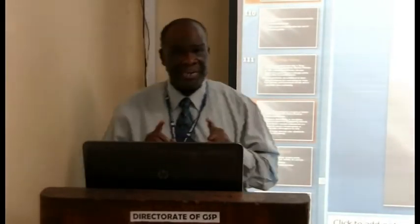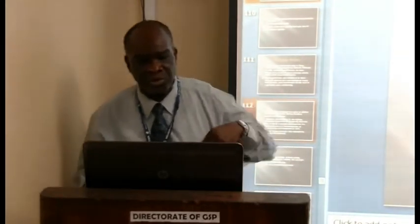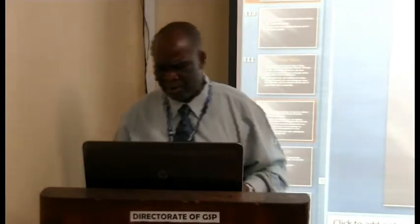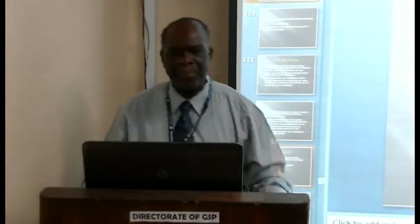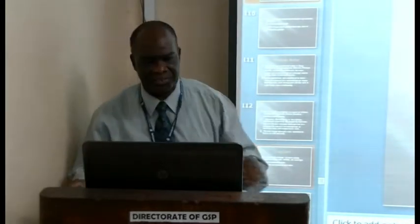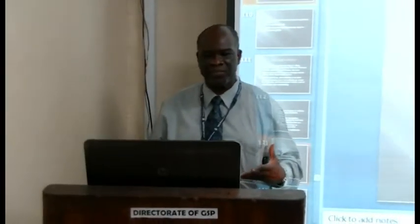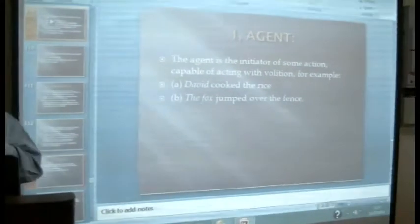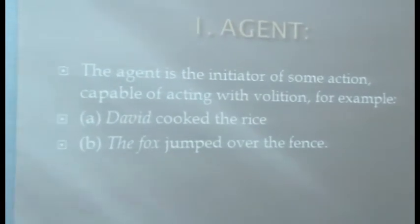In Downey's account, each noun or noun phrase in a sentence fills one of a limited number of thematic roles with respect to the verb. Downey gave us nine major thematic roles. The first is the agent — the initiator of some action, capable of acting with volition, that is, self-will. For example, in 'David cooked the rice,' David is the agent. Or in 'The fox jumped over the fence,' the fox is the agent — the doer or performer of the action.